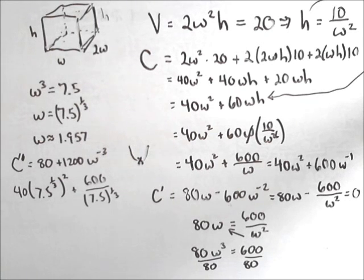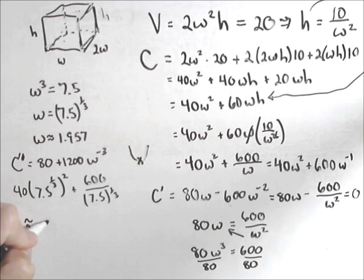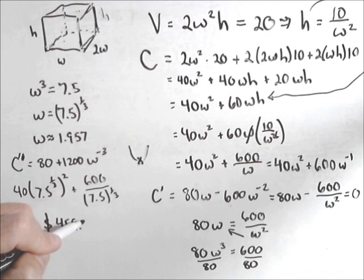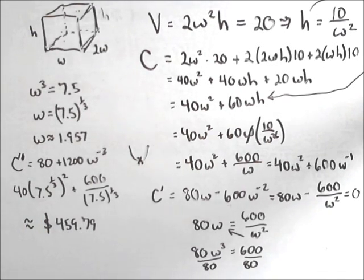I'm going to run this while we're talking. Give me just a sec. When you guys try along, just make sure we're getting this all in the same answer. I get two decimals since we're talking money. $459.79 is the cost of the cheapest such container.